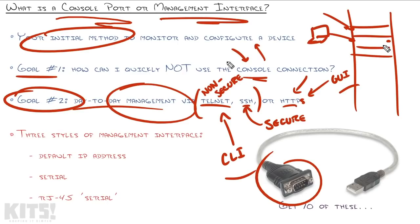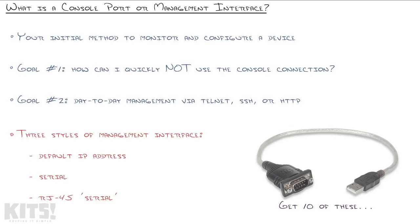The console connection is just there for initial setup and disaster recovery. If everything is down and you can't reach the switch, you run into the IT room and connect to the console port. It will often let you see the switch booting up, so if there's a hardware failure you can see it in the boot process rather than just staring at blinking lights.